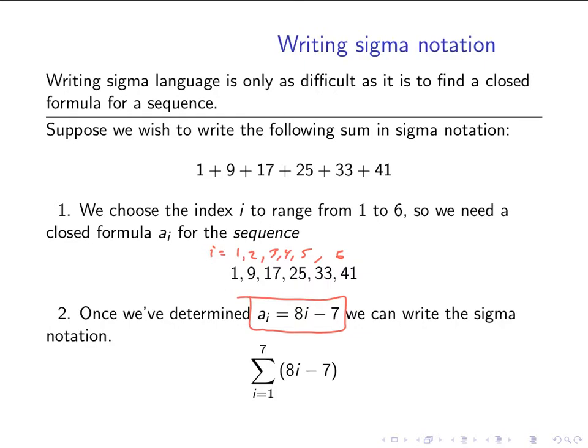And so, let's see, I have a typo here. This is 6. So this sigma notation, i equals 1 to 6, 8i minus 7, is the sigma notation expression for this sum.